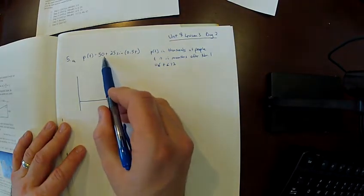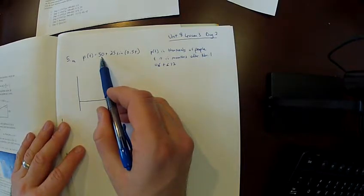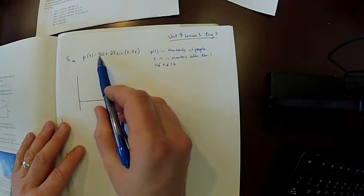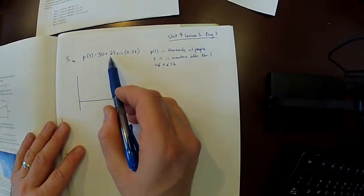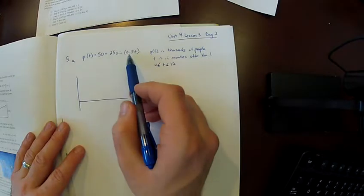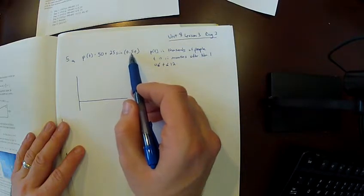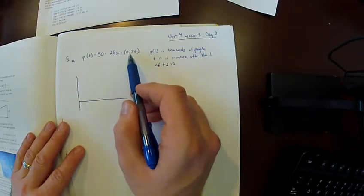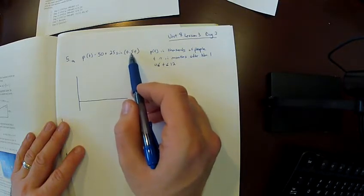Right away I know that this 50 is the midline, so if we're talking about thousands of people, this has an average population of 50,000. The 25 is the amplitude of this function, so we know this will reach a maximum of 75,000 and a minimum of 25,000. And this 0.5t is referencing the angular speed, or some sort of rate that's dealing with people coming and going within the sine function.